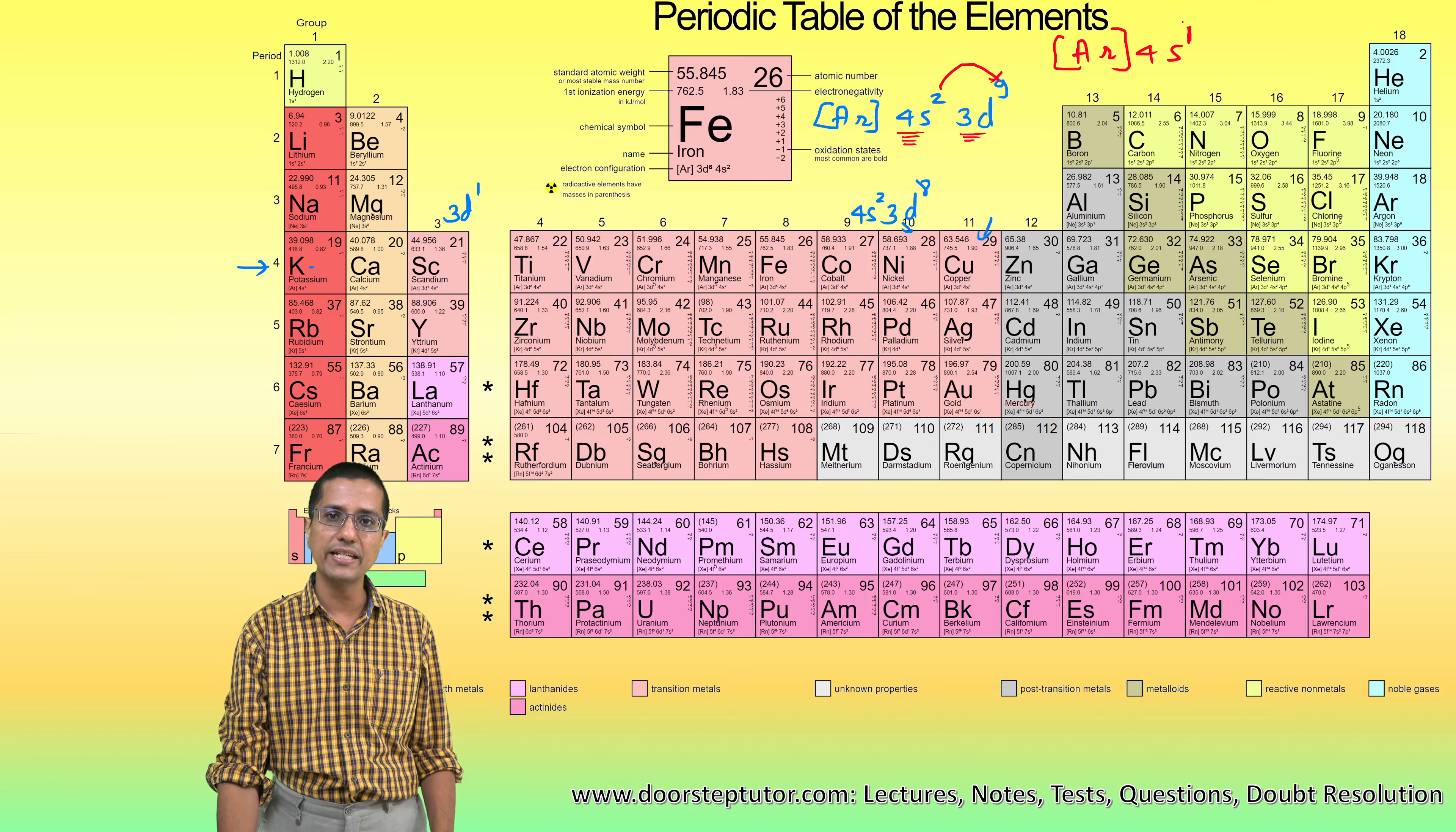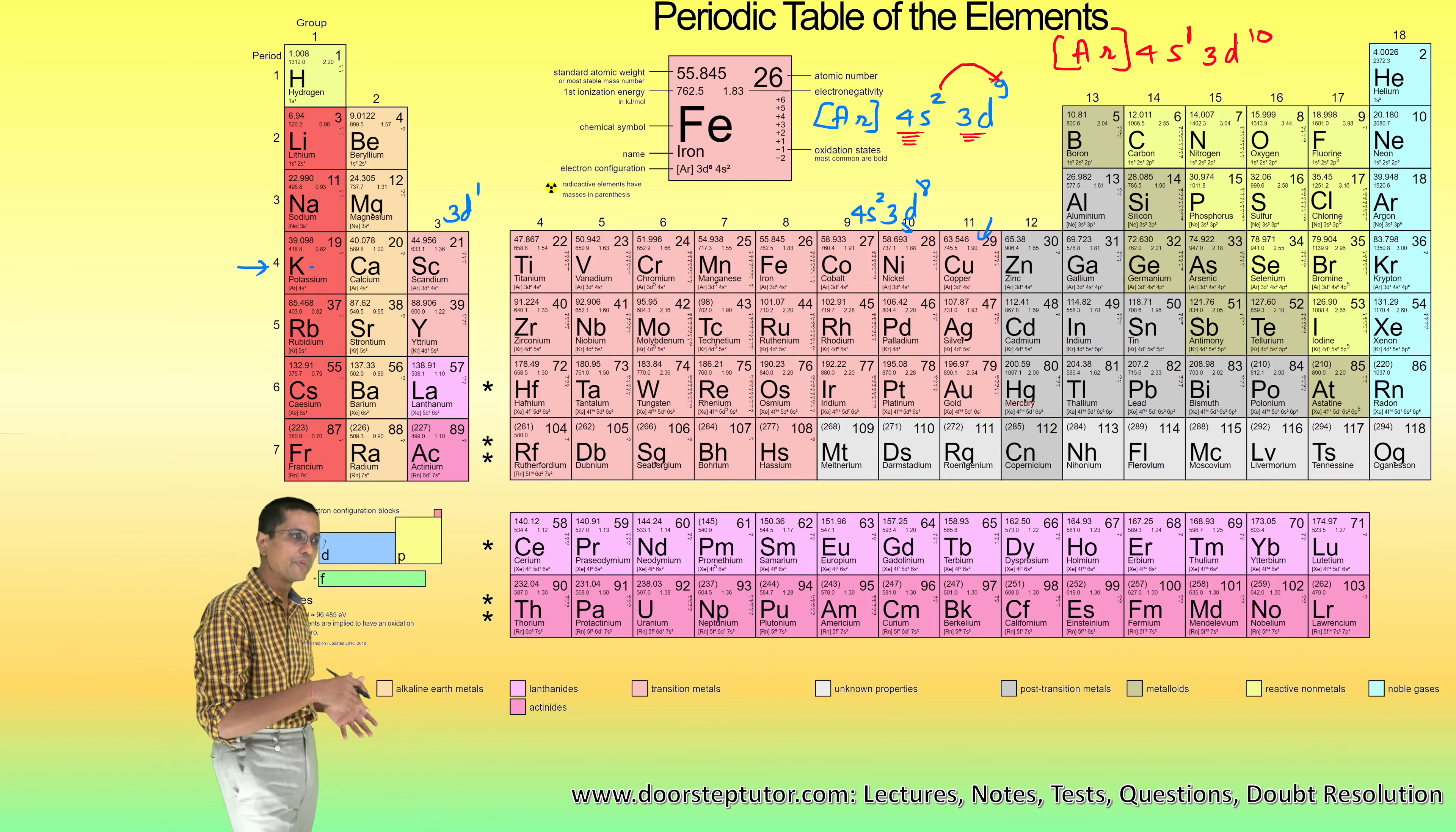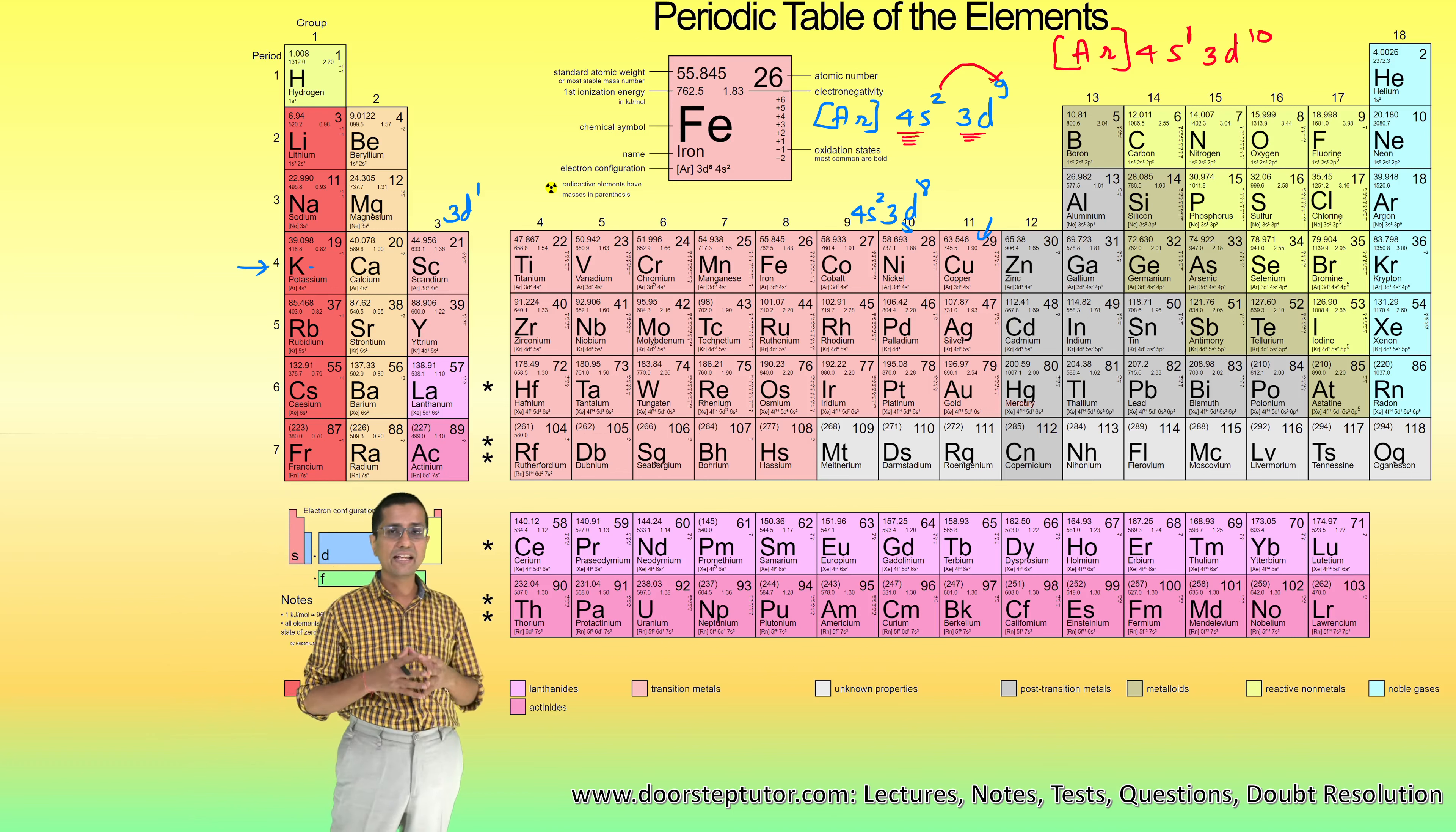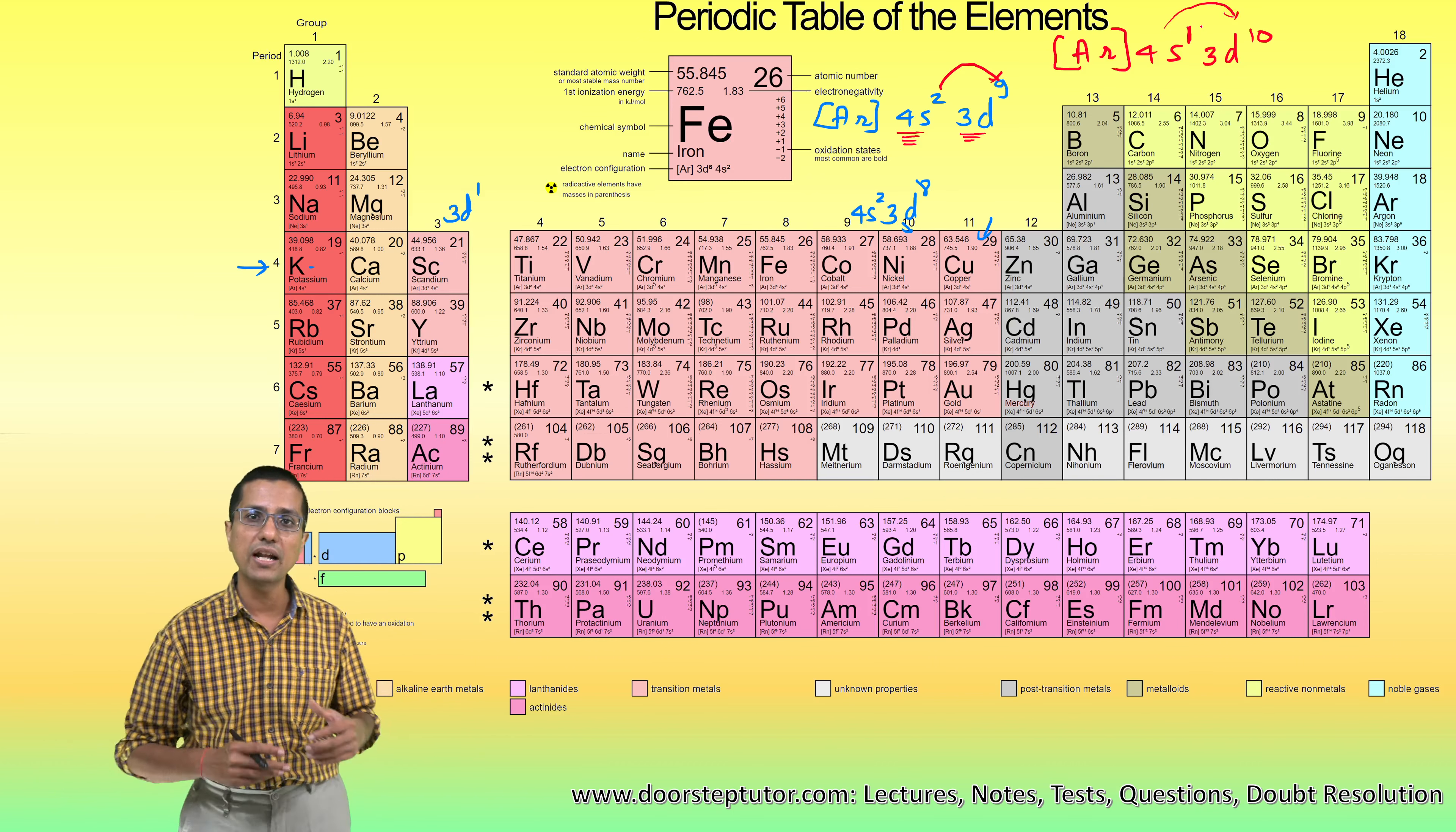We have made the 4s sub-shell half-filled, and in copper we have made the 3d sub-shell fully filled. Now what is the additional benefit we are getting in making the 3d orbital fully filled? Why does this electron jump from the 4s orbital to the 3d orbital at all? It was already in a fully filled sub-shell, so what additional benefit is it getting?